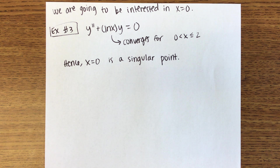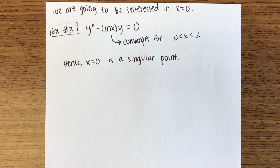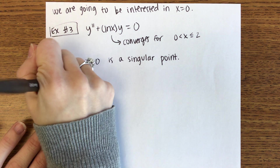Any questions on ordinary and singular points before we go on? When would something not have a positive radius of convergence? It's not going to have a negative — it could have a radius of convergence of zero.